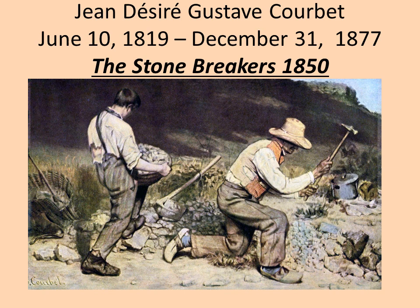The Stone Breakers by Courbet realizes his aim of informing the masses about the harsh existence of peasant workers during his time, by revealing the trying conditions that miners had to face so as to encourage people to aid them. The painting shows two peasants — a boy on the left and a much older man on the right — and a grown man in tatters slaving away on boulders with mallets.